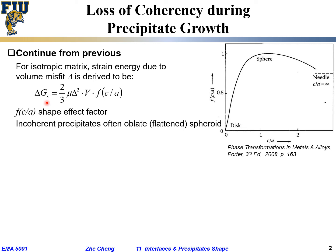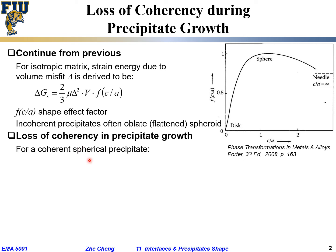That's why in many cases, incoherent precipitates quite often take the shape of a squeezed sphere — how squeezed depends on that value. As a precipitate grows from small to larger, quite often people find that in the very beginning it's coherent, but as it grows it gradually loses coherency. For a coherent precipitate, the total energy would be the interfacial area term plus the chemical bonding term plus the strain energy term, where the strain energy term is proportional to the volume.